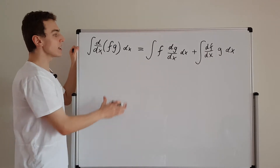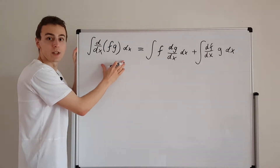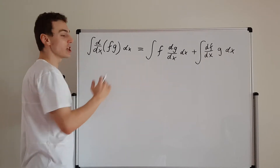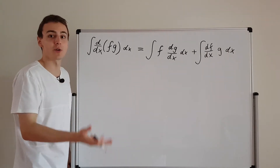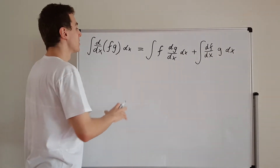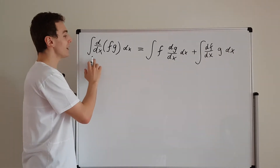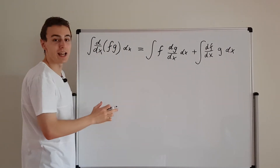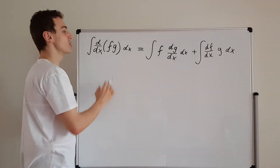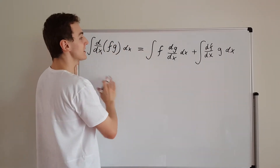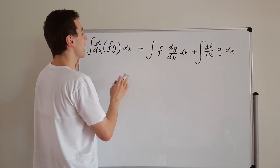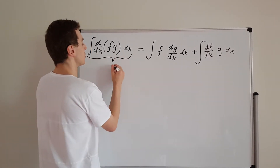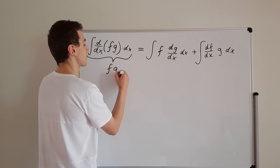What does the left-hand side turn into? This is the fundamental theorem of calculus — differentiation and integration are opposites of each other. So if we integrate the derivative of f times g, we just get f times g back. The left-hand side is simply the product of the two functions f times g.